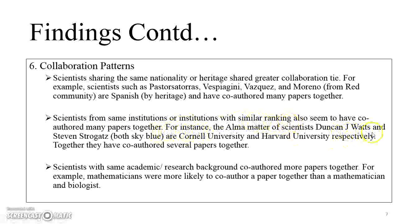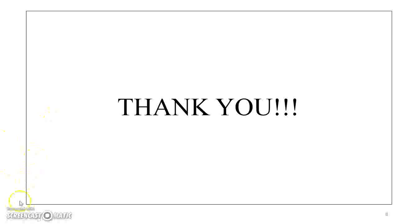For example, scientists Duncan J. Watts and Steven Strogatz graduated from Cornell University and Harvard University respectively, and together they have co-authored several papers. The final collaboration pattern observed is that scientists with the same academic and research background are more likely to co-author papers — for example, mathematicians are more likely to co-author with other mathematicians. With that, this concludes my research analysis. I hope you liked it, and thank you for watching.